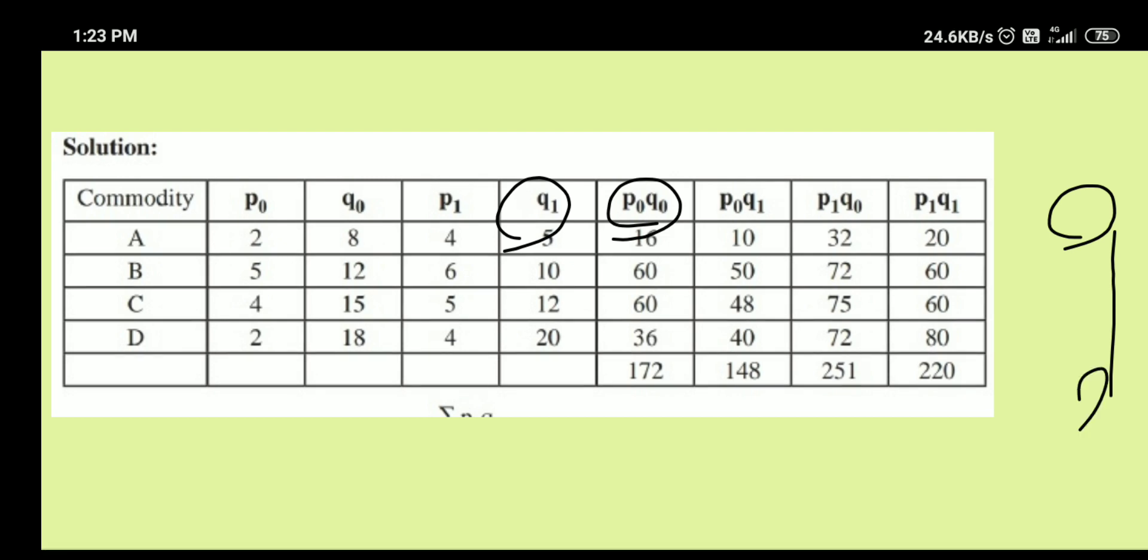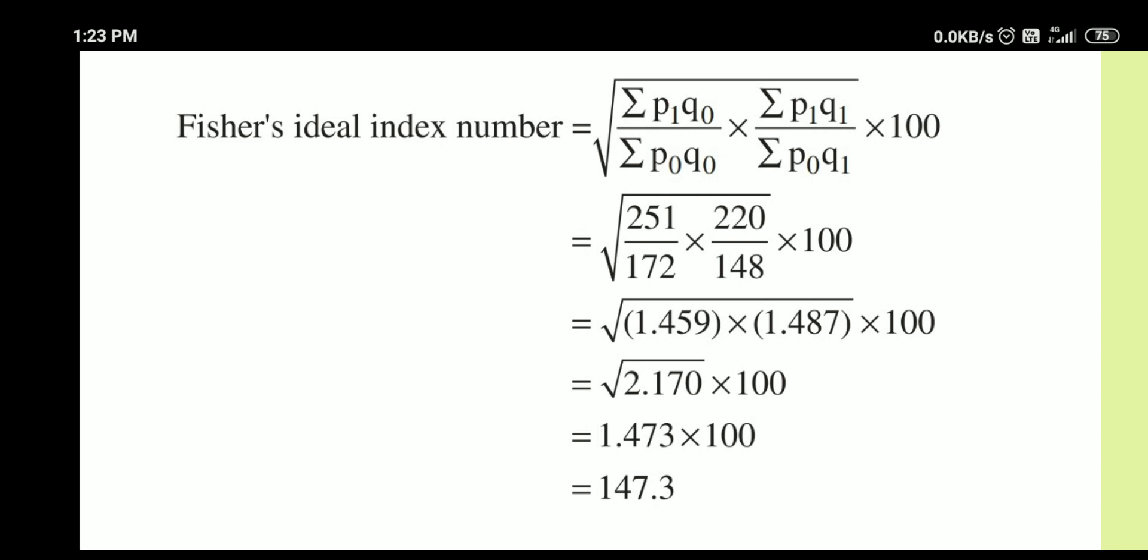See, we are going to apply Fisher's price index number formula. Square root of summation P1 Q0 by P0 Q0 into summation P1 Q1 by P0 Q1. So we have all these four items.